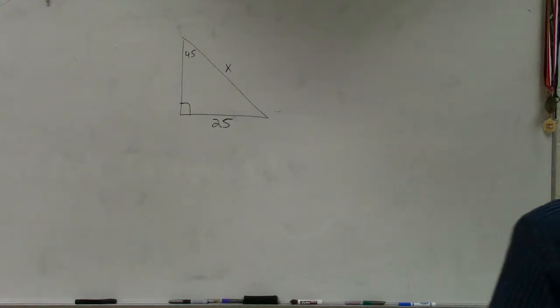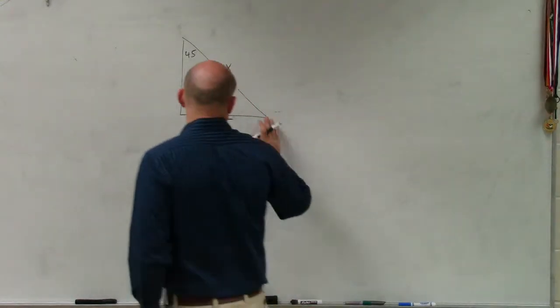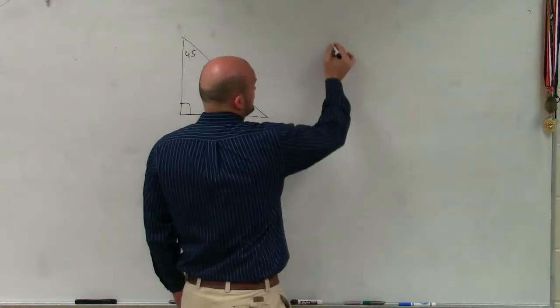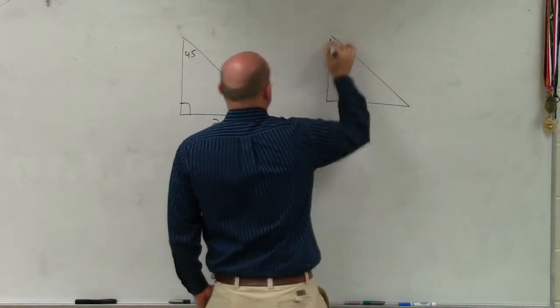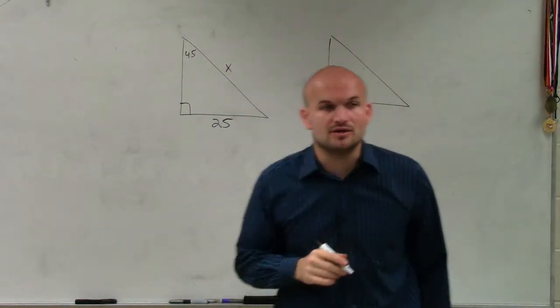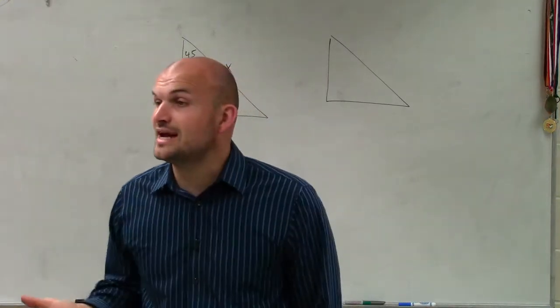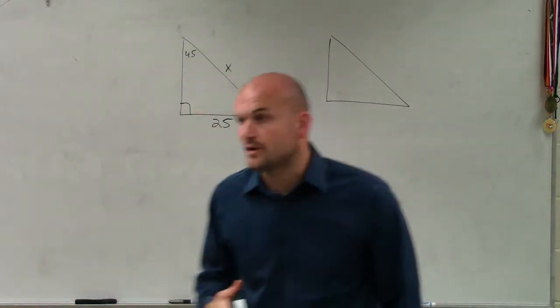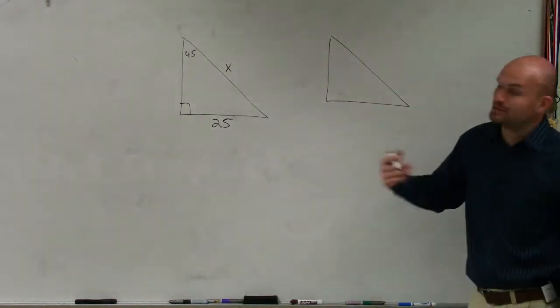So Dustin, as we're looking at a special right triangle, there was the 45-45-90 triangle that we talked about, as well as the 30-60-90 triangle that we went over last class period. Or not last class period, but last problem.